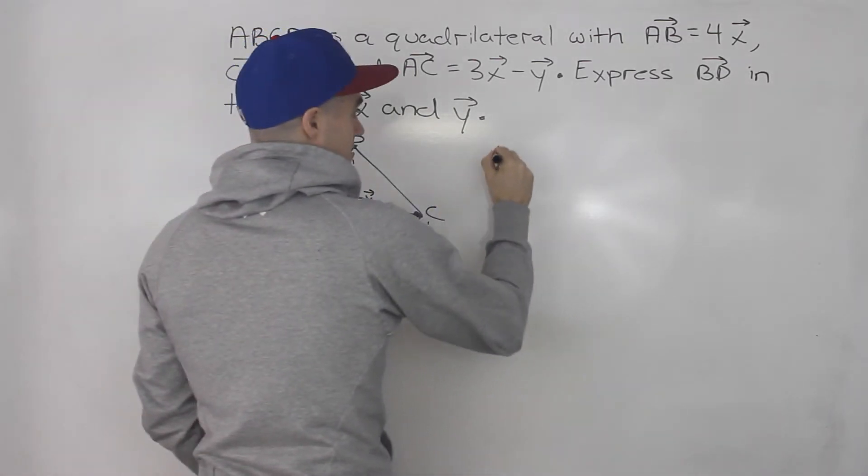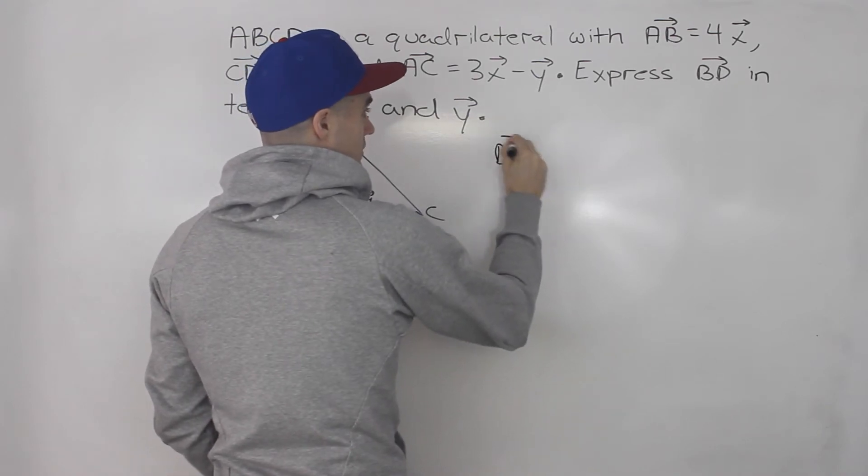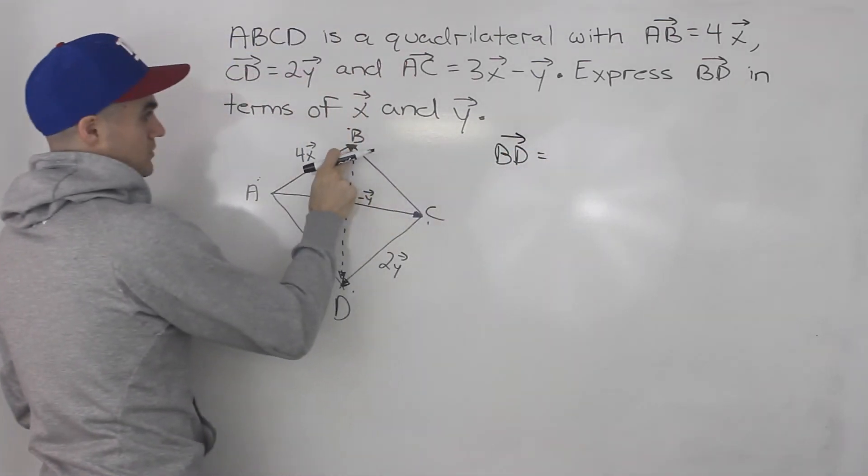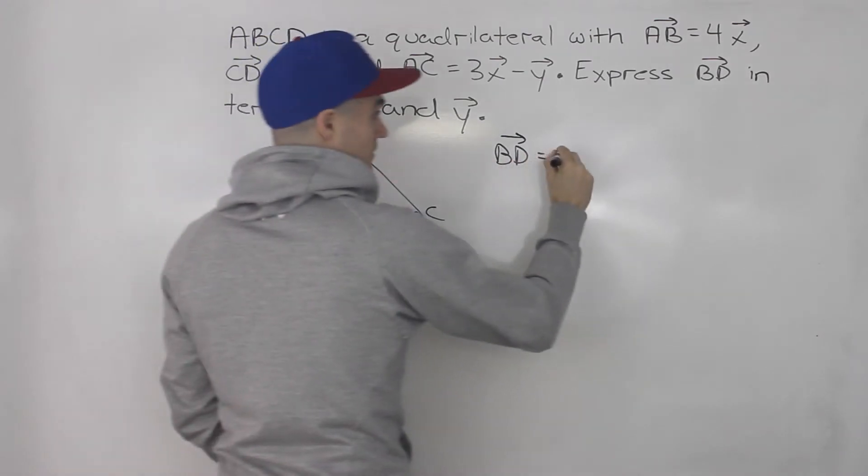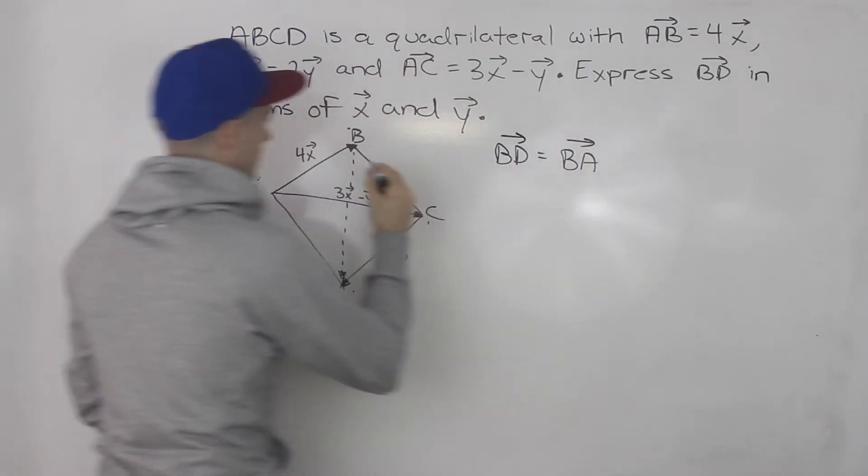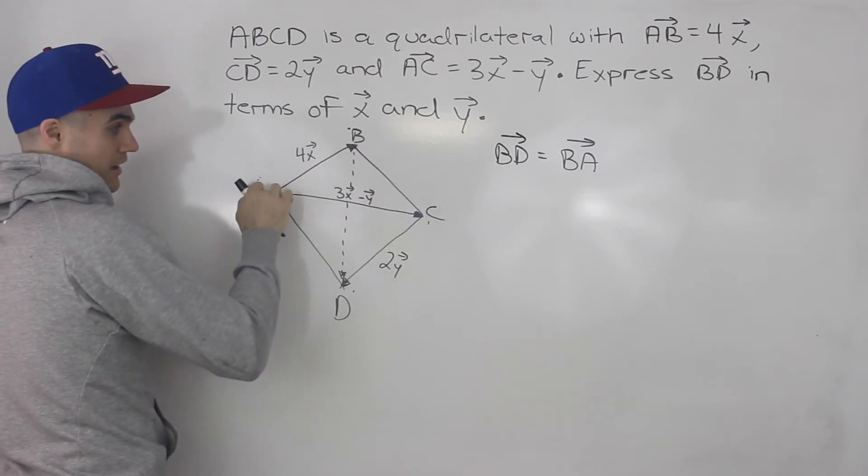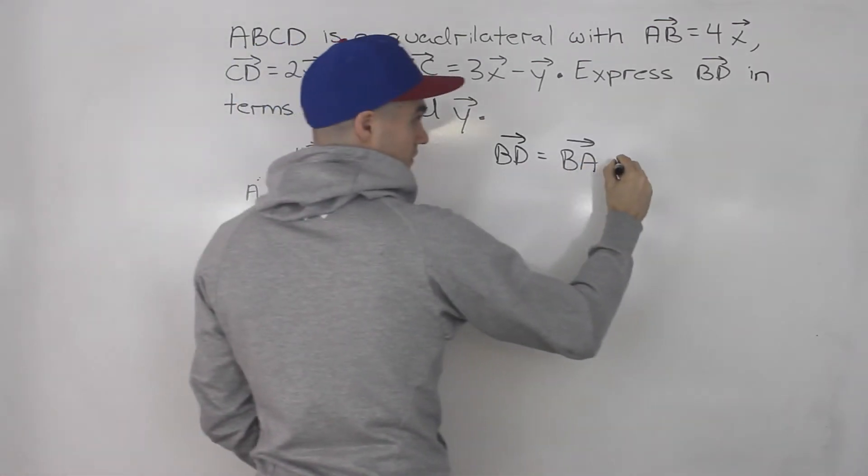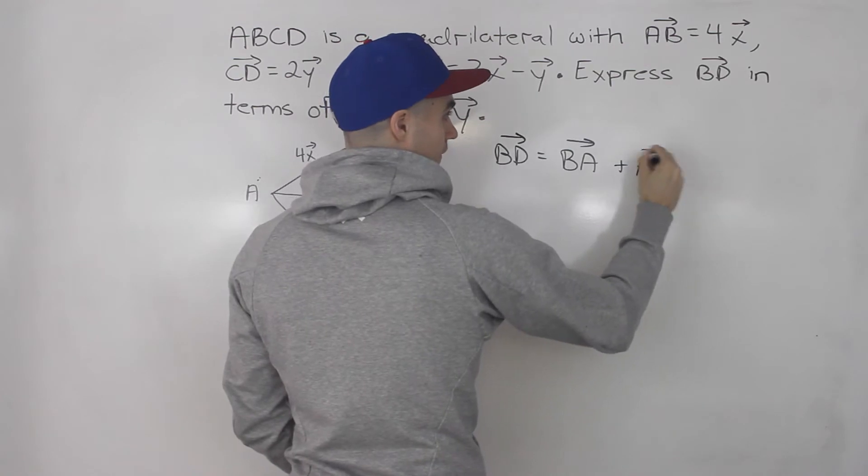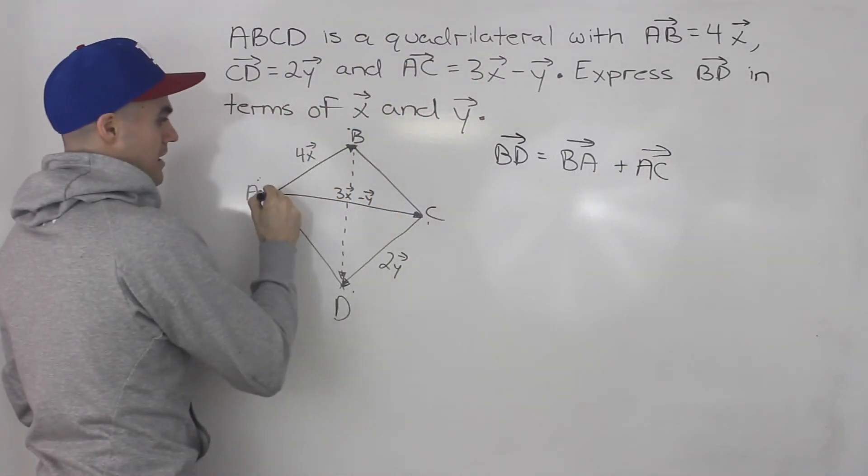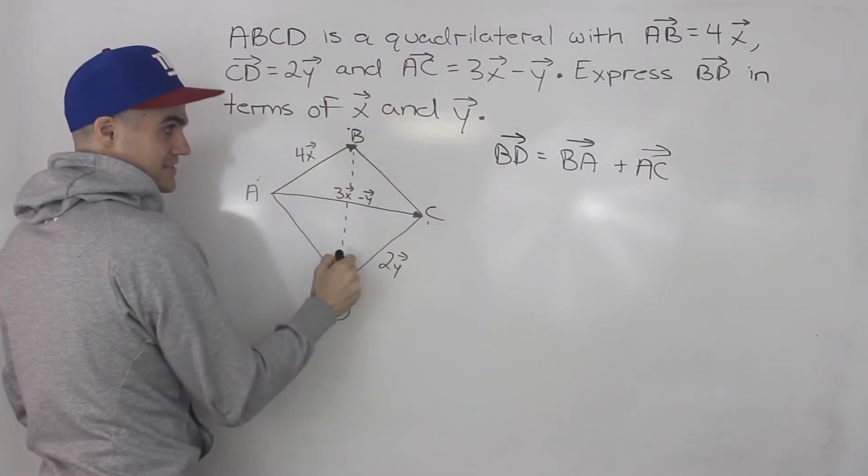So basically, we can say that vector BD is equal to vector BA—so it would be this vector, but going the opposite way—plus vector AC. So BA plus AC plus CD.